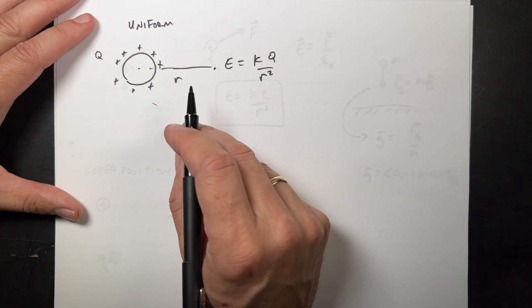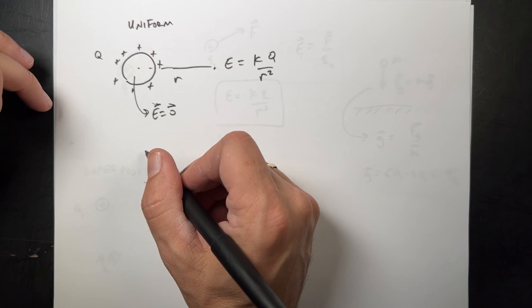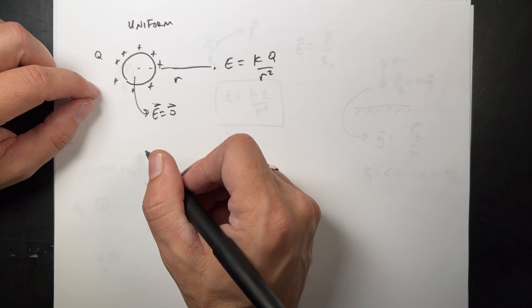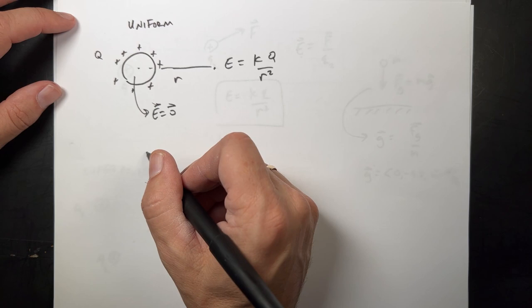If you're inside and the charge is only on the surface, the electric field is zero inside. If it's uniformly distributed through the inside, that's not true. That's important because if it's a metal, the charges will all be on the surface and the electric field inside would be zero. And that is true. The electric field inside of a metal conductor in equilibrium will be zero.